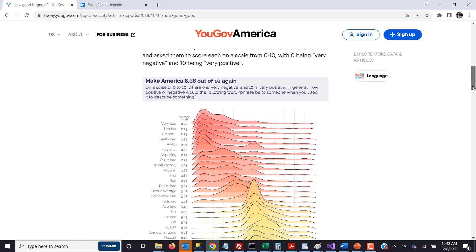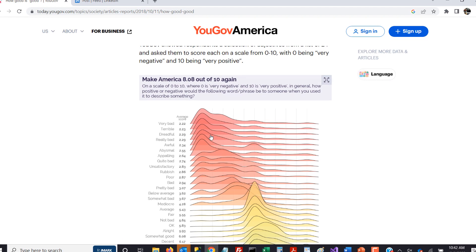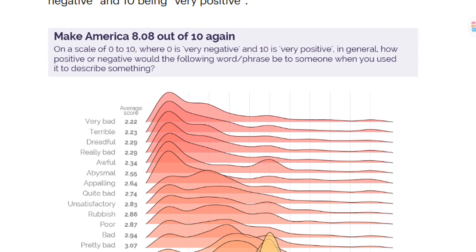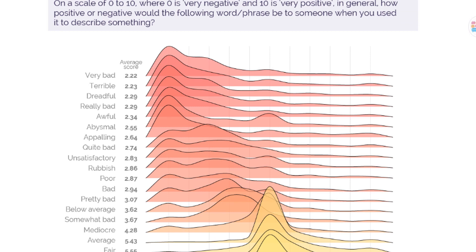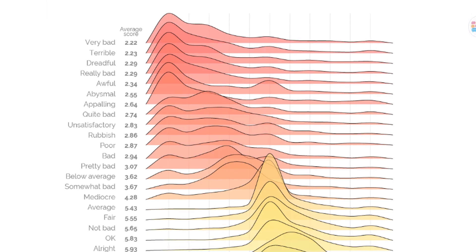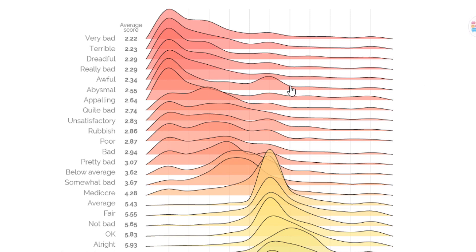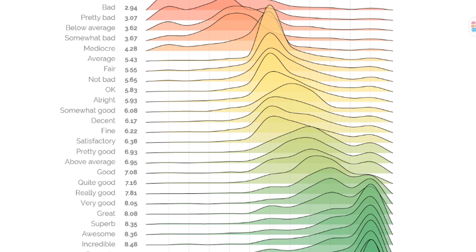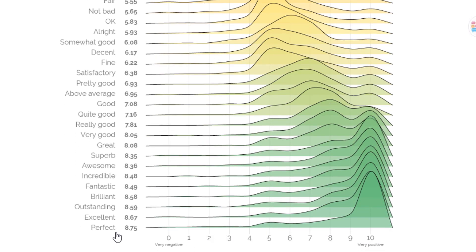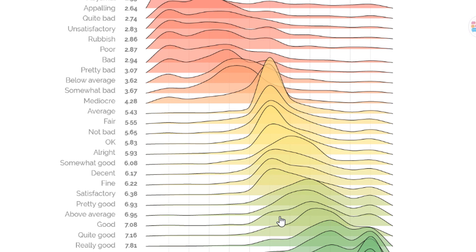In the article, they tried to link a numeric number between 0 and 10 to words in the English language, and they ran this over two datasets in England and America. These are the results — very bad is an average score of 2.22 and then all the way up to 'perfect' at 8.75. You can see the different distributions around each of the different words.